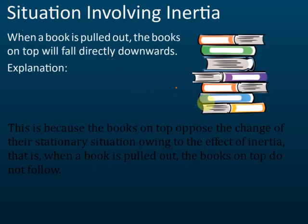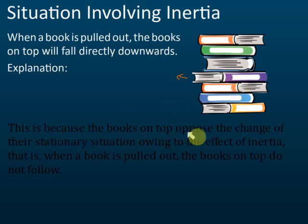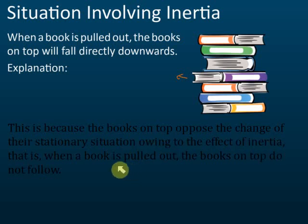Another example: if you pull a book out very fast from a stack, the book above it will not move together with the pulled book — it will fall directly downwards and land on the book below. You must do it very fast. This is also because of inertia. The book on top opposes the change of its stationary situation owing to the effects of inertia, so when the book is pulled out, the book on top does not follow.